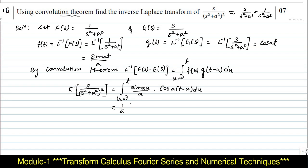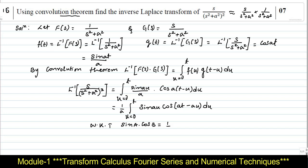Taking out 1/a, we are left with (1/a) times the integral from u=0 to t of sin(au)·cos(at − au) du. To integrate these two terms, we are going to use the trigonometric identity: sin(A)cos(B) = (1/2)[sin(A+B) + sin(A−B)].